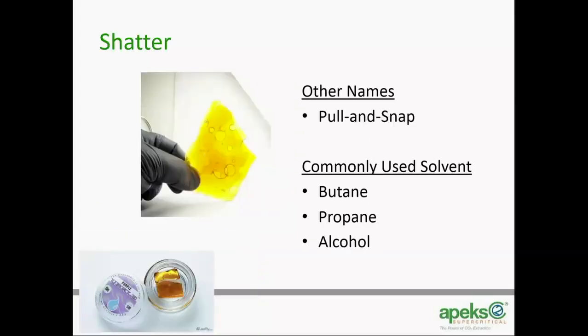Shatter — or pull and snap — is when you take that crumbly material, put it into a vacuum oven, let it sit for 30 minutes to an hour at a relatively low temperature, and it settles down into a flat sheet. Done right, it can be more like taffy — bendable — or the really pricey stuff, when done with enough processing experience, creates a snap like glass, which generally garners a higher price. These are all similar in THC content, but as the industry commoditizes, producers have to find ways to differentiate. The clearer and more brittle it is, the higher quality it's considered — because it's easier to use in a dab rig.